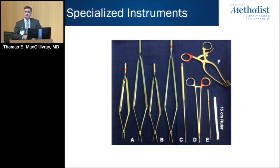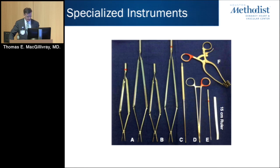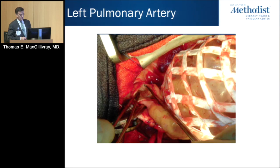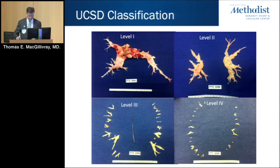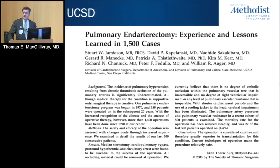There are specialized surgical instruments developed to make this operation easier — double-action forceps that allow you to hold the specimen while using an endarterectomy spatula different from what we use for carotid endarterectomies or peripheral artery endarterectomies. Once you're done with the right, you go into the left, and again this is all done under direct vision. When you're done, the specimens should look like level one and level two: level one in the main pulmonary arteries extending into the lobar and segmental arteries; level two starting in the lobar and going into the segmental arteries; level three just the segmental arteries; and level four into the sub-segmental components.